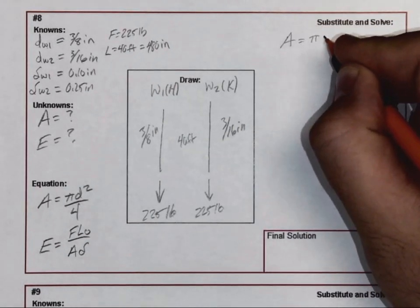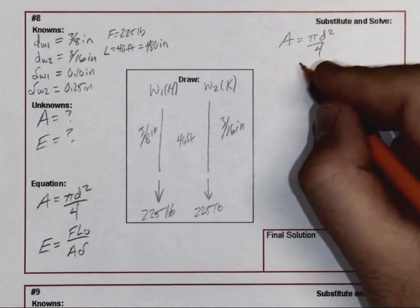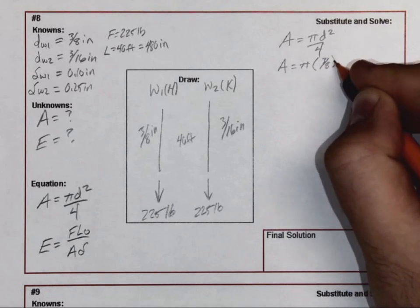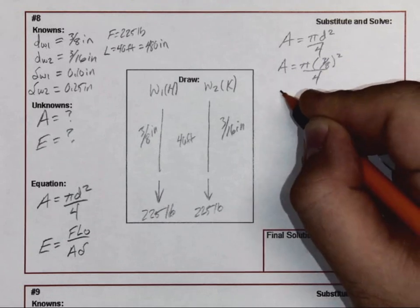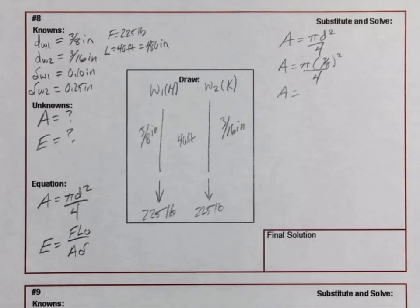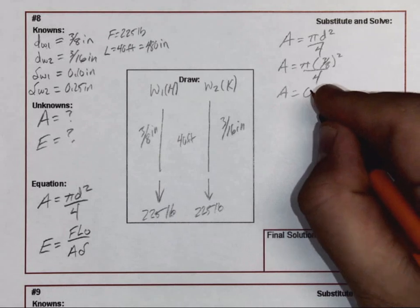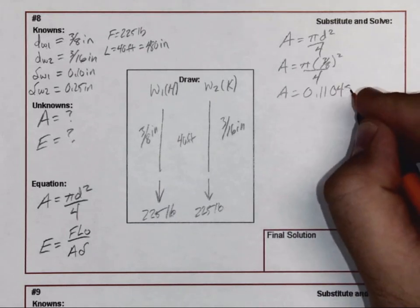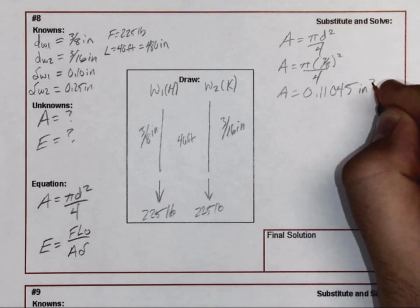π times diameter squared over 4. Area: so the diameter of wire one is 3/8 of an inch. When I put this in the calculator, 3/8 squared times π and then divided by 4, I'm going to get a value—I'm going to go out to a few significant figures here—0.11045 square inches.